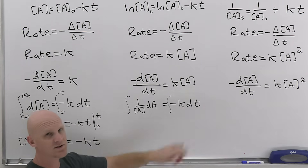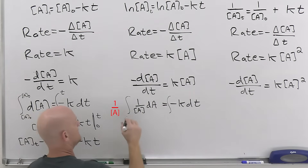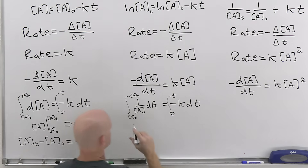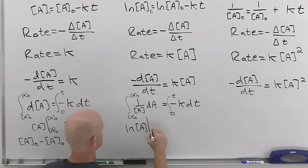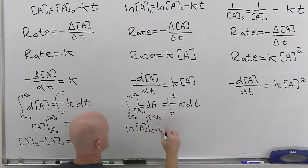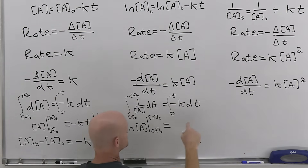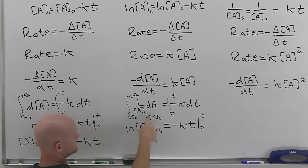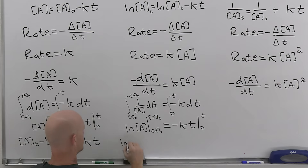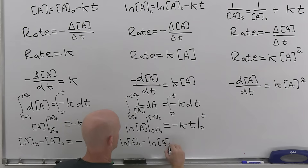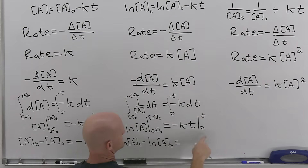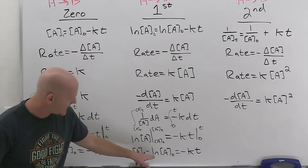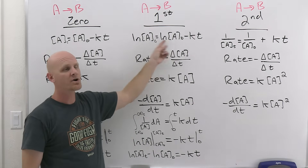We integrate both sides as definite integrals — the left from A-initial to A at time t, the right from zero to t. The integral of one over A is the natural log. So we get ln[A] from A-initial to A(t) equals negative Kt from zero to t. Applying final minus initial gives ln[A(t)] minus ln[A-naught] equals negative Kt. Adding ln[A-naught] to both sides gives you the first-order integrated rate law.